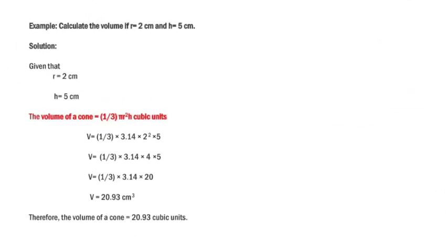Let us see one example: calculate the volume if R equals 2 centimetres and H equals 5 centimetres. Given: R equals 2 centimetres and H equals 5 centimetres. The volume of a cone is 1/3 πR²H — I wrote cubic units because this is volume, and volume is length × breadth × height. So V equals 1/3 into 3.14 into 2² into 5. R squared is 4, so we have 1/3 into 3.14 into 4 into 5. 4 times 5 is 20, so V equals 1/3 into 3.14 into 20. Doing the simplification we get 20.93 cubic centimetres. Therefore, the volume of a cone equals 20.93 cubic units.